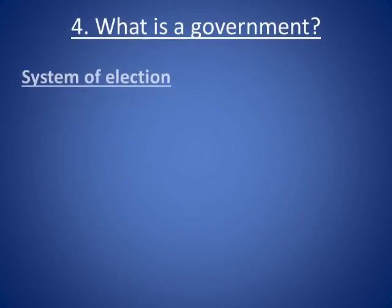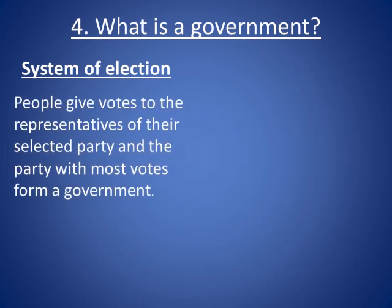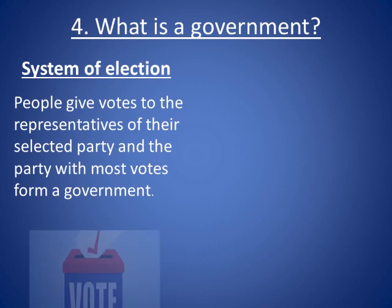What is a government? It is the group of people with the authority to govern a country or a state. How are they chosen? There is a system — national elections are held after every five years to elect the government. People of the community give votes to their selected representatives from different parties, and the party with the most votes forms the new government.